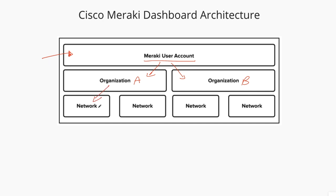So here you can select organization A, or network B — sorry — and organization B the same thing. You have network A and network B. So it's going to depend on how you want to configure the structure of all your networks on your dashboard, but that's the hierarchical approach. You're going to have your user accounts, and once you log in you can select each organization, and inside of each organization you're going to have a network.